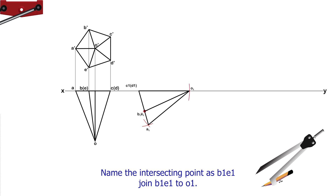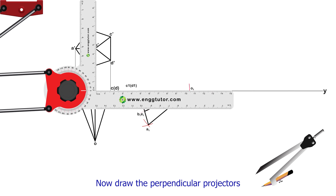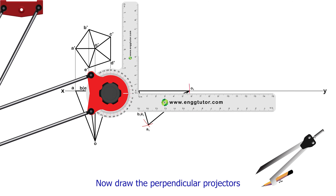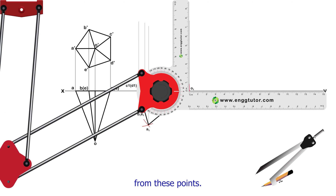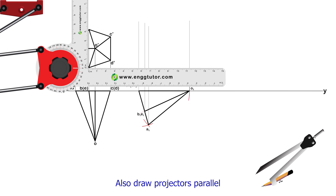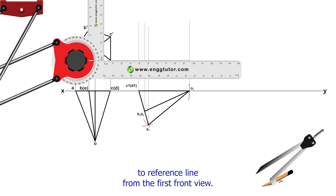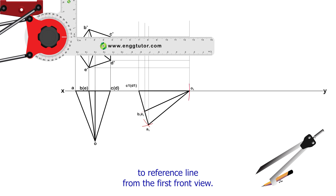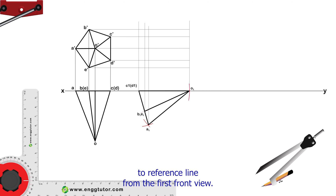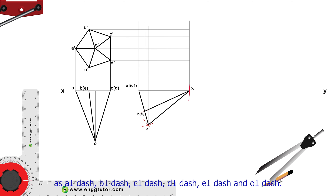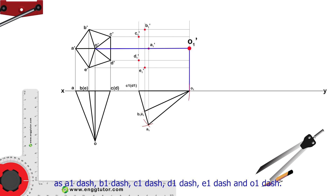Join C1D1 to A1 and O1 to A1. Measure the length from A to B in the first top view. Put the needle of the compass at A1 and cut an arc on this line; name the intersecting point as B1E1. Join B1E1 to O1. Now draw perpendicular projectors from these points, and also draw projectors parallel to the reference line from the first front view. Name the intersecting points as A1', B1', C1', D1', E1', and O1'.